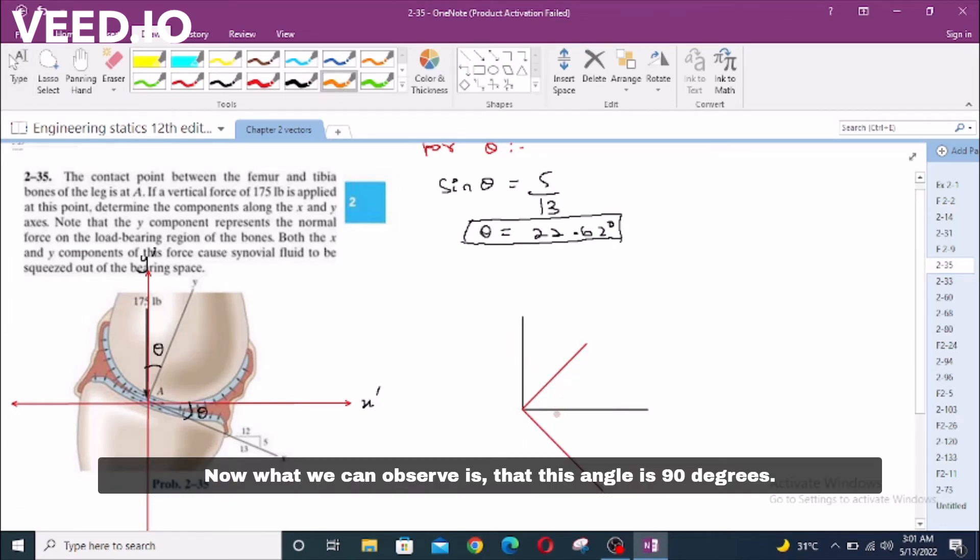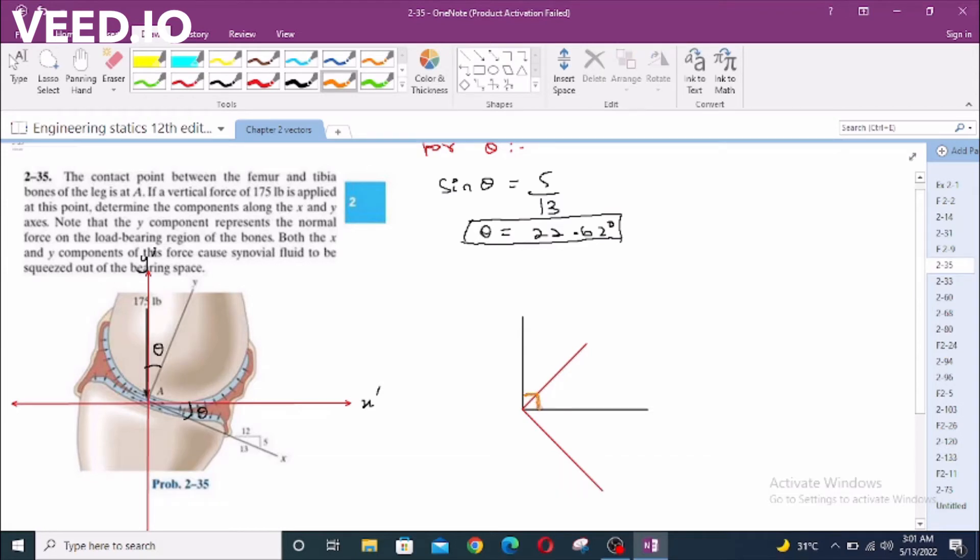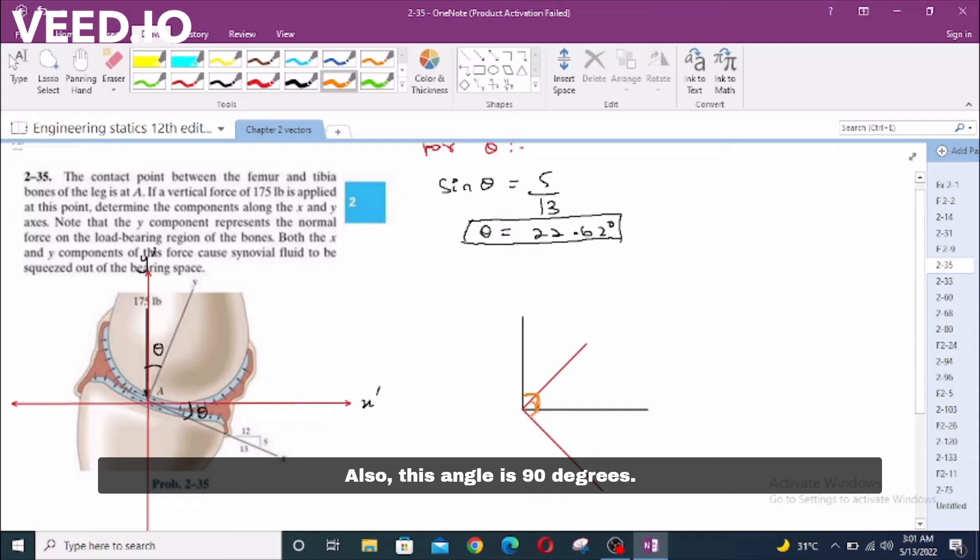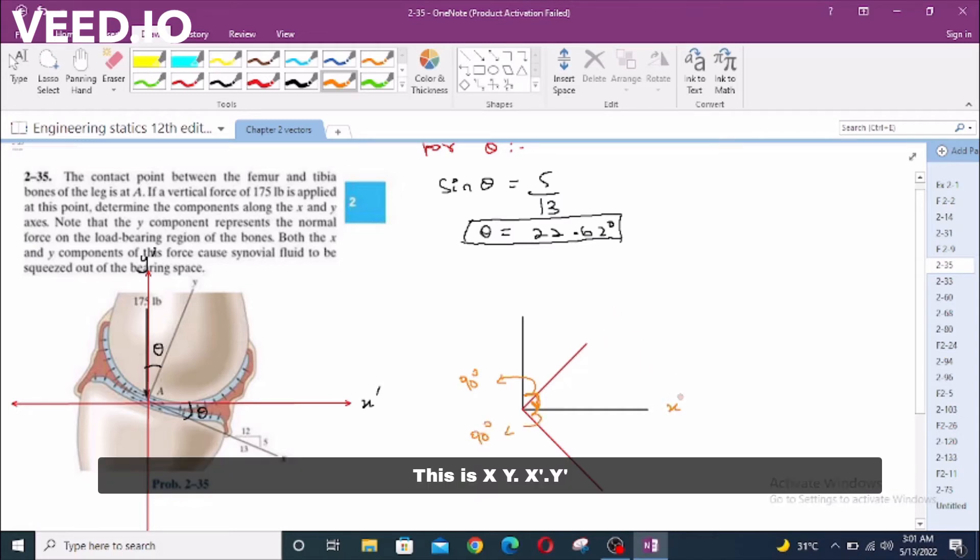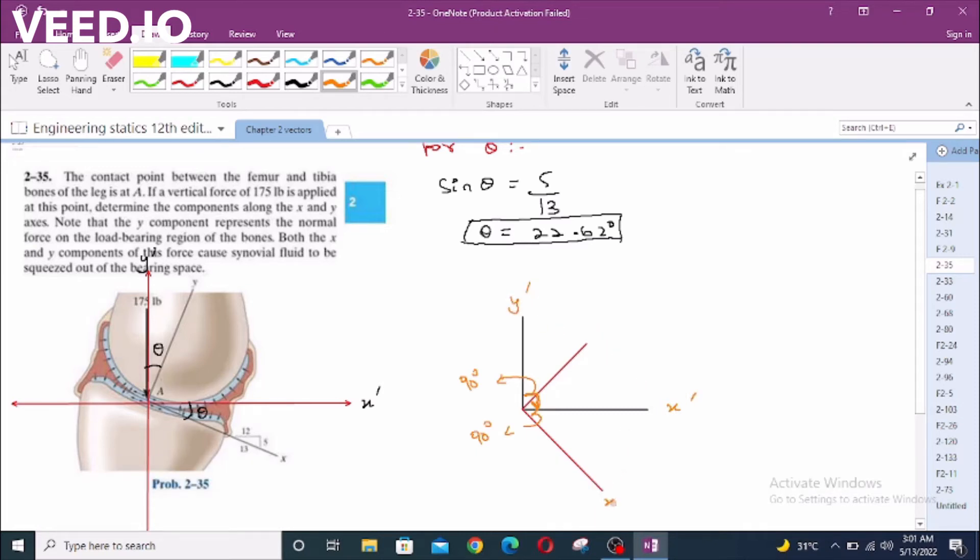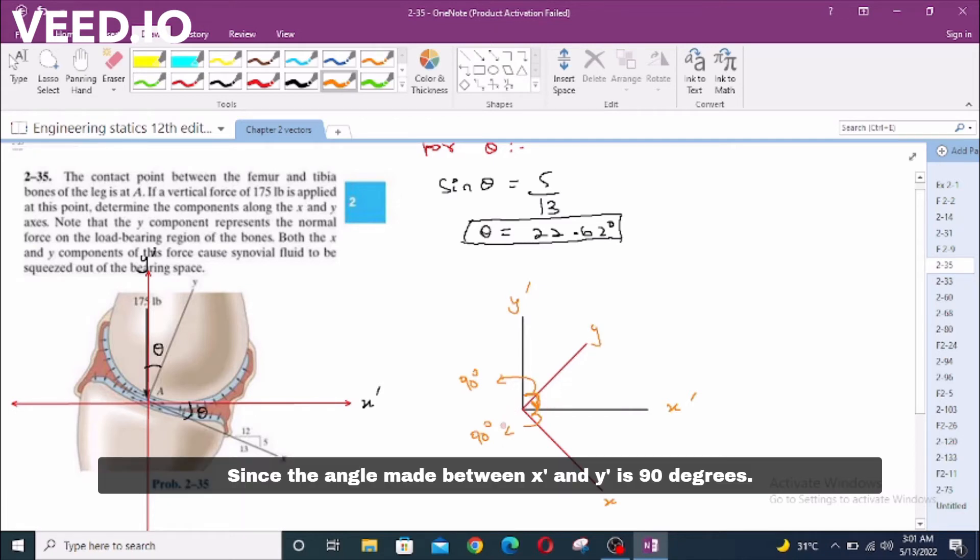Now, what we can observe is that this angle is 90 degrees. Also, this angle is 90 degrees. This is X, Y, X Prime, Y Prime, X, Y. Since the angle made between X Prime and Y Prime axis is 90 degrees, and also the angle formed between X and Y axis is 90 degrees.